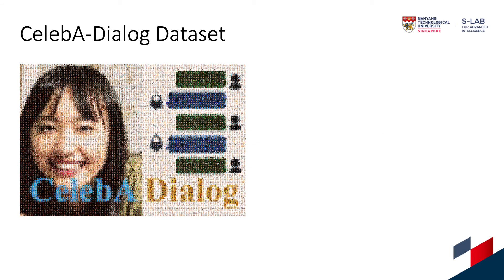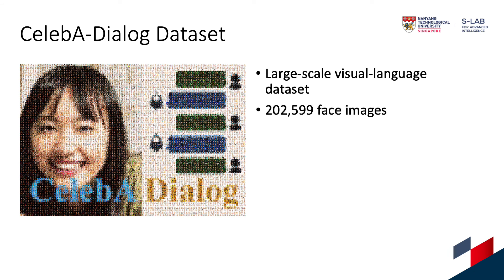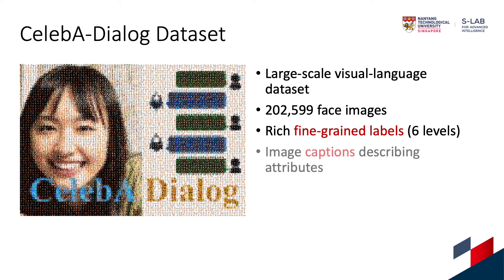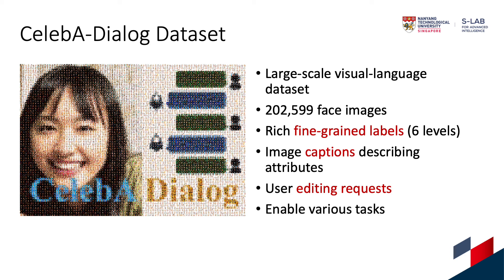Apart from the TalkToEdit framework, we also contribute the CelebA Dialog dataset. This is a large-scale visual language dataset with more than 200,000 images. Unlike binary labels, we provide fine-grained labels that describe attribute degrees among six levels. Also, for each image there are several image captions describing the semantic attributes, plus one editing request. This dataset can enable various computer vision tasks like fine-grained facial attribute recognition and language-based face generation and manipulation.